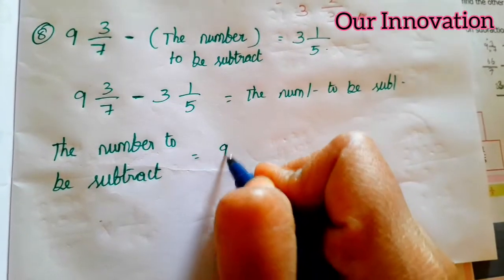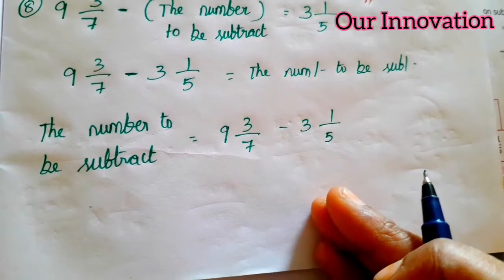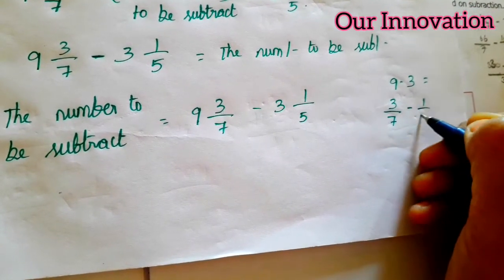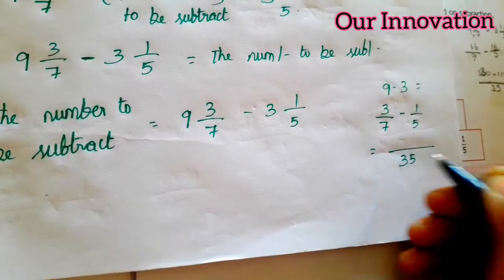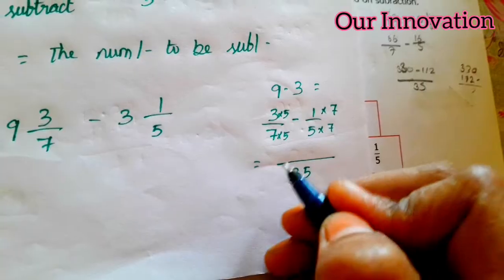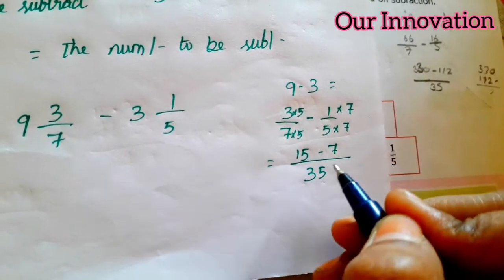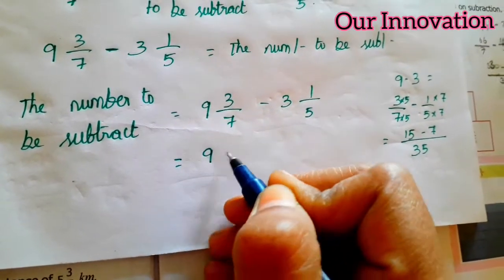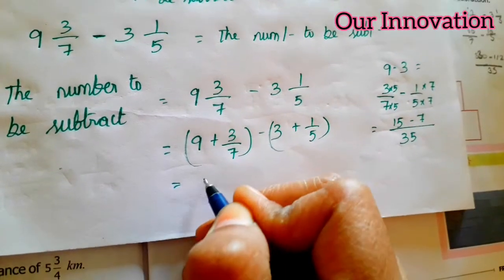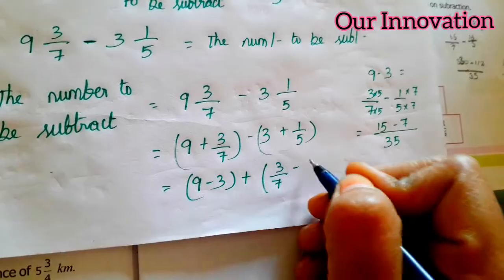Students, can we subtract this? 9 and 3 by 7, minus 3 and 1 by 5. So compare and subtract, convert improper fraction and subtract. So 9 minus 3, and the fraction part: 3 by 7 minus 1 by 5. So common denominator 35 to come. 5 into 5, 7 into 7. So 5 threes are 15, minus 1 seven is 7. This is greater number, this is smaller number.